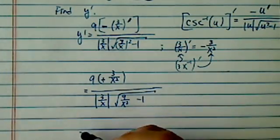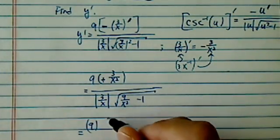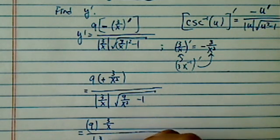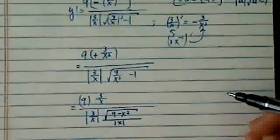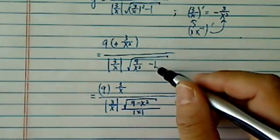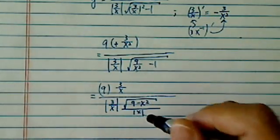We'll have some simplification here. 3 over x, 3 over x, and then we have 9 minus x squared divided by x, and then we have 9 minus x squared. All I did is made a common factor here and brought x outside.